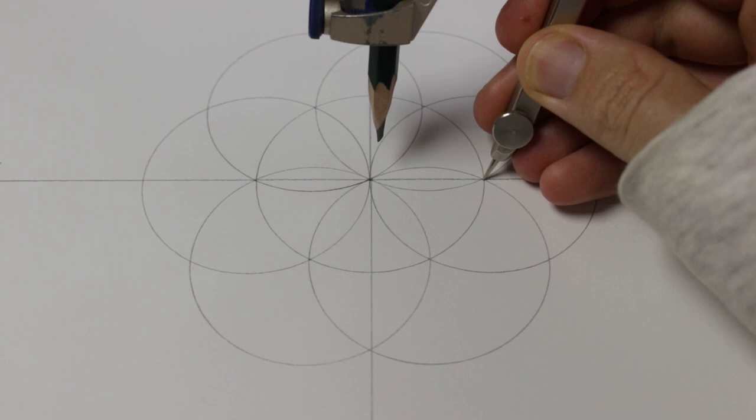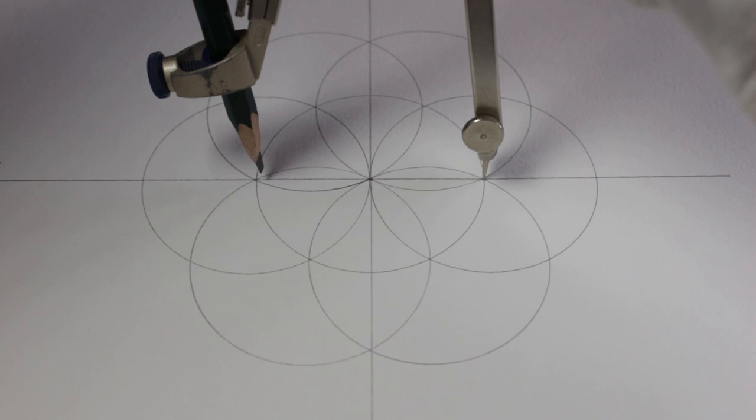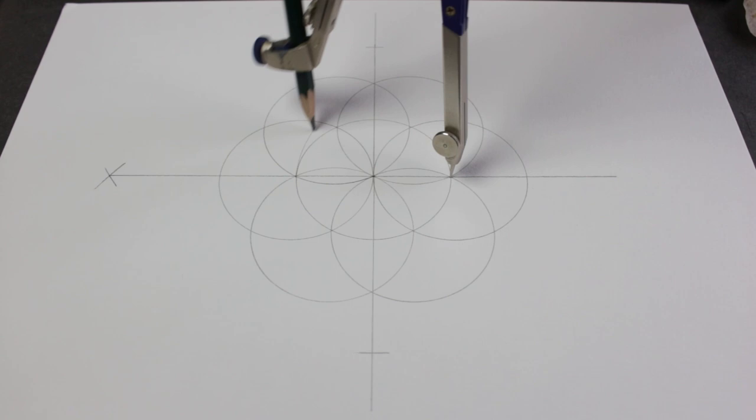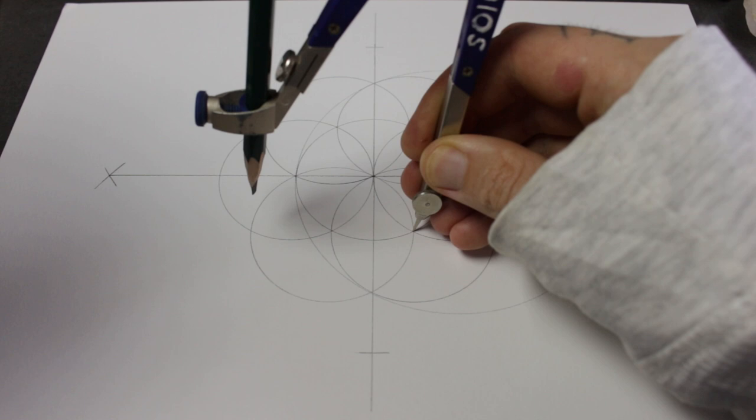And then I'll put my compass in that same point that we drew that circle on the right, put it there, open it up to the diameter of the circles and then I'm going to draw another circle here. And then what you're going to do is just work your way around the seed of life using the same points that you already did.